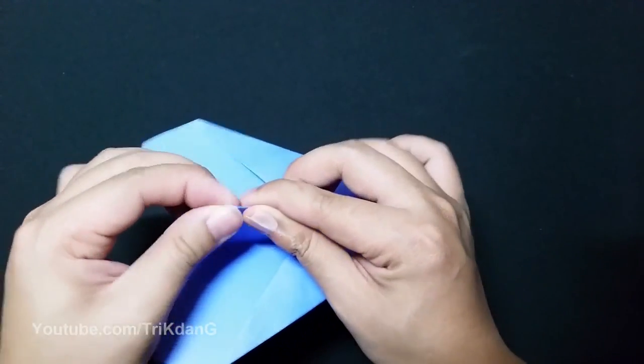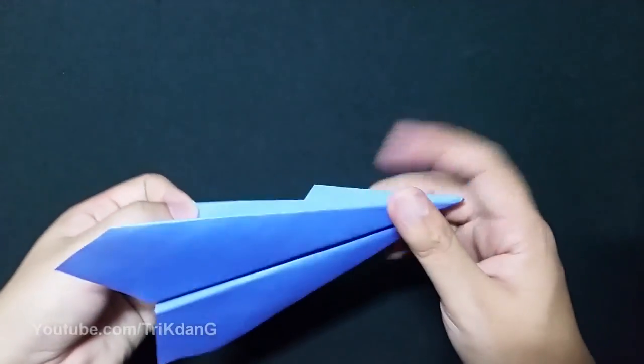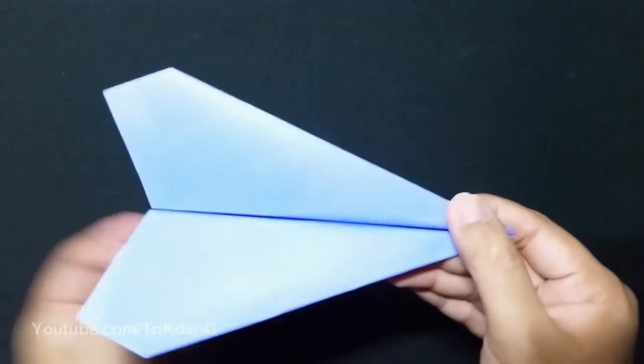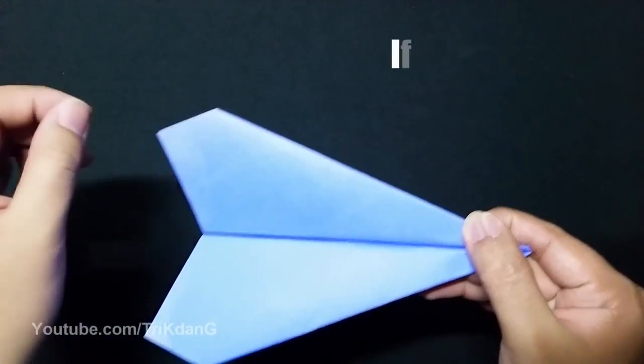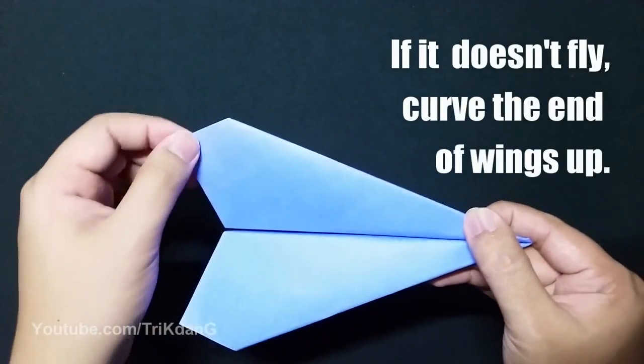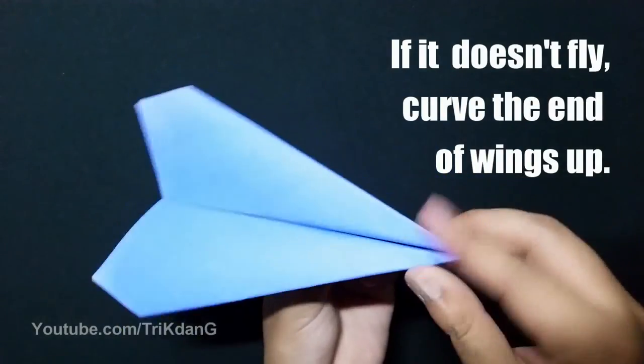Open the wings, I mean the body. Push it in. Now you create a triangle shape. This is very good for now. Now you can curve this end of the wings up a bit if it doesn't fly up. Okay, here you go. This is the spiral.